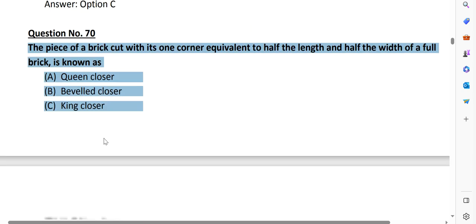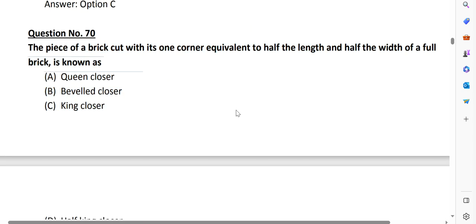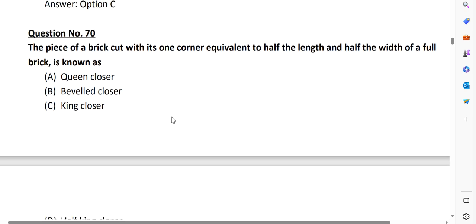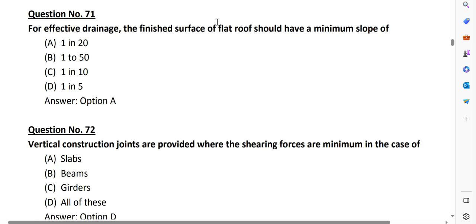Question number 70, the piece of brick cut with its one corner equivalent to half the length and half the width is called king closer. So this concludes the discussion for this part. Thank you.